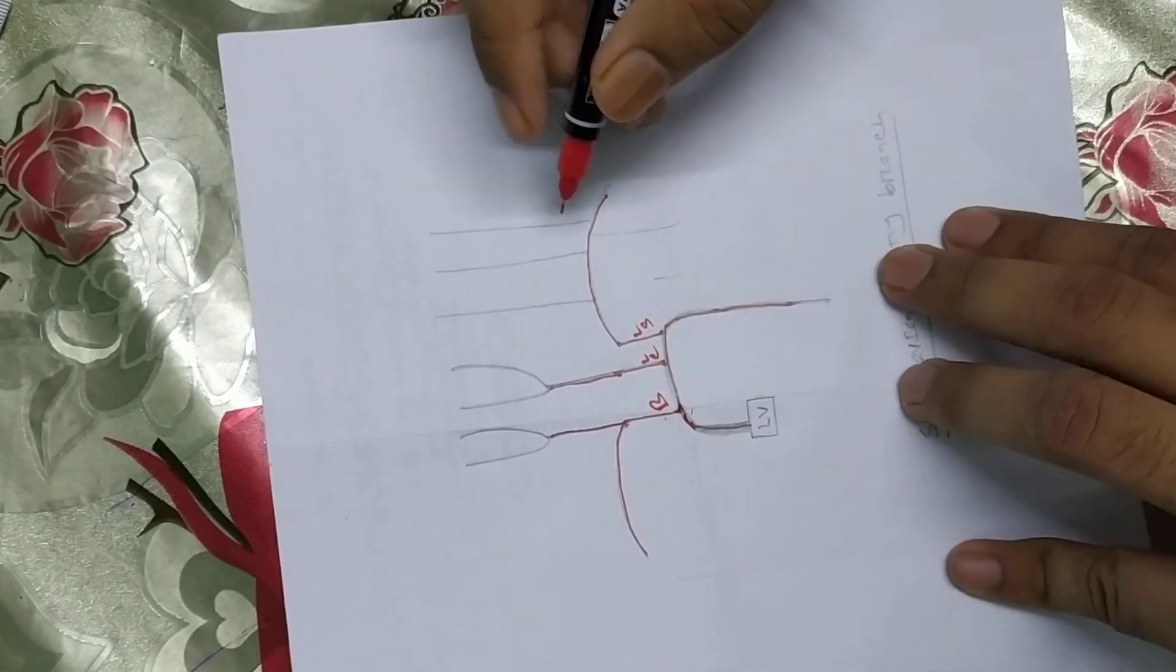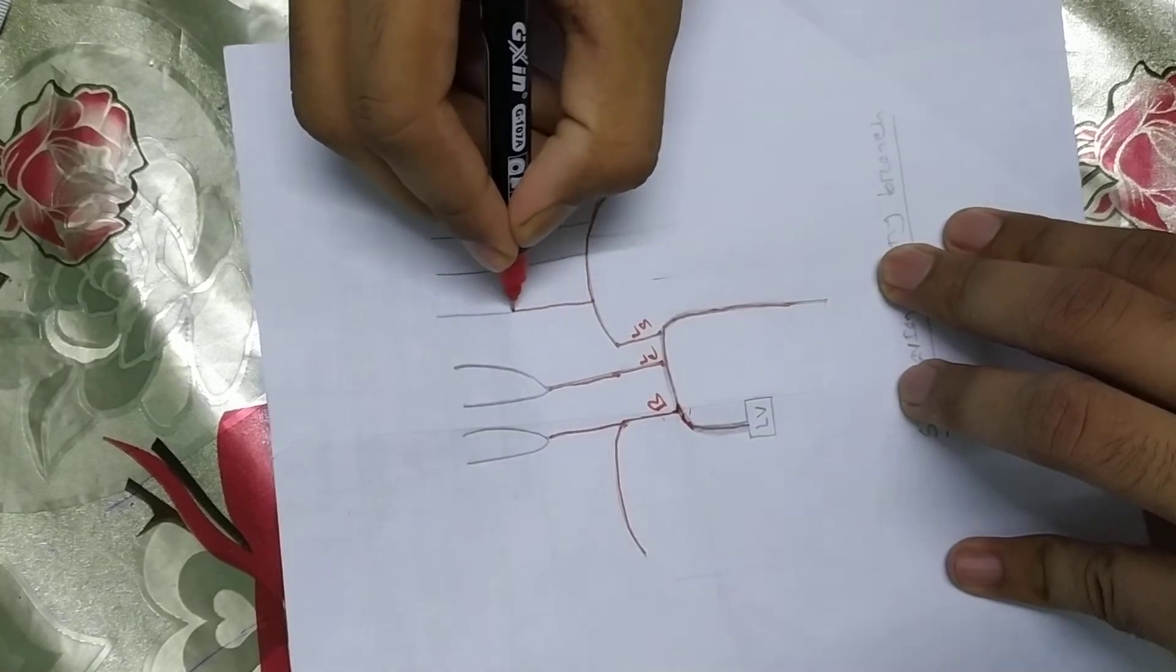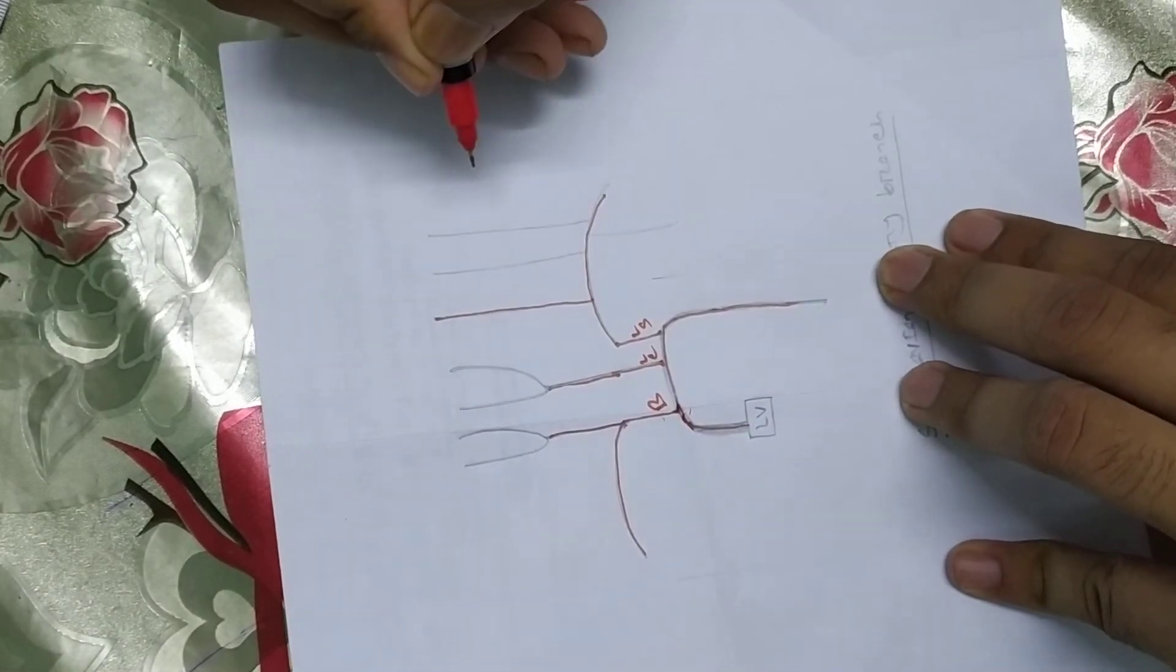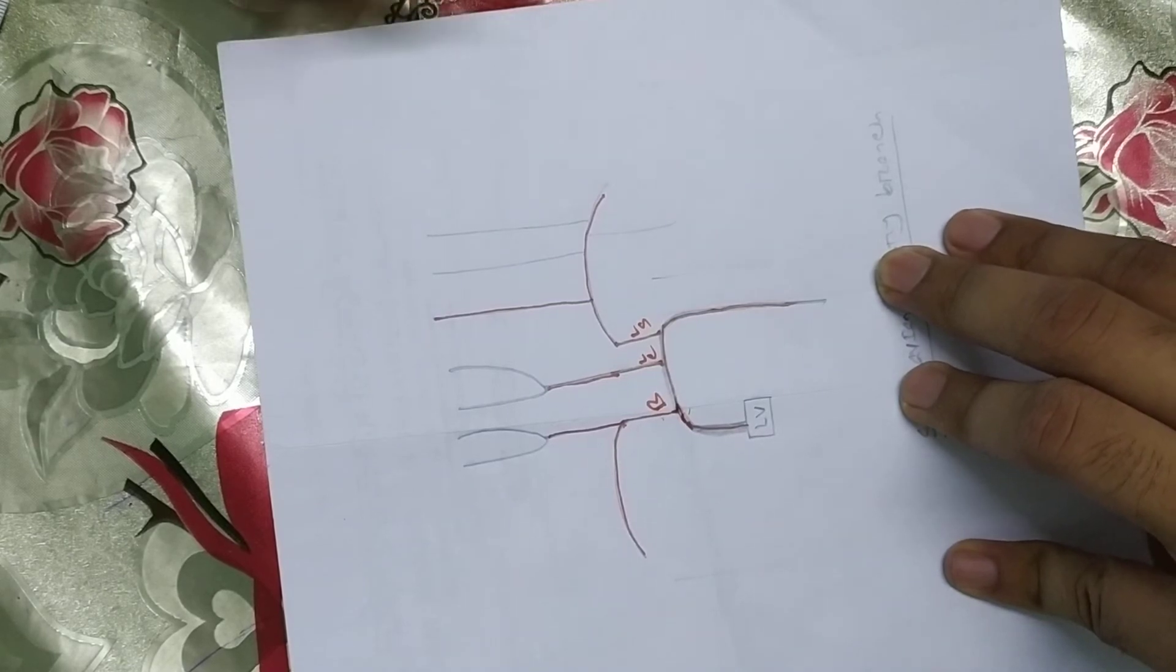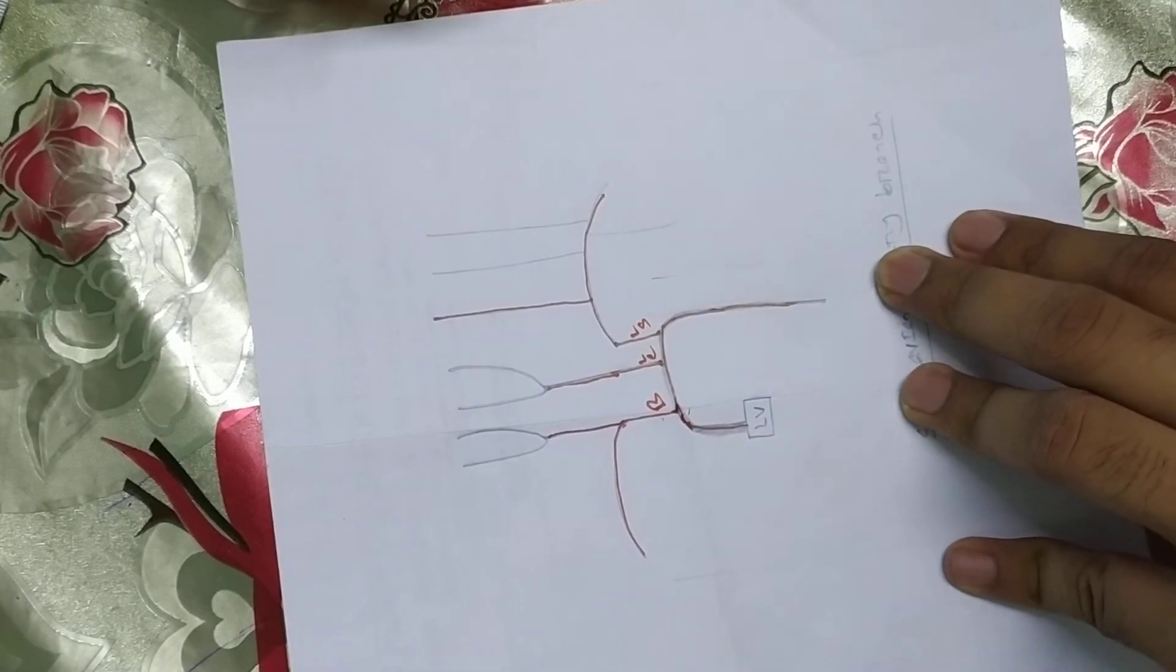We can see the subclavian artery, which gives the vertebral artery. This vertebral artery has been formed by the basilar artery. We can see it in the next slide.